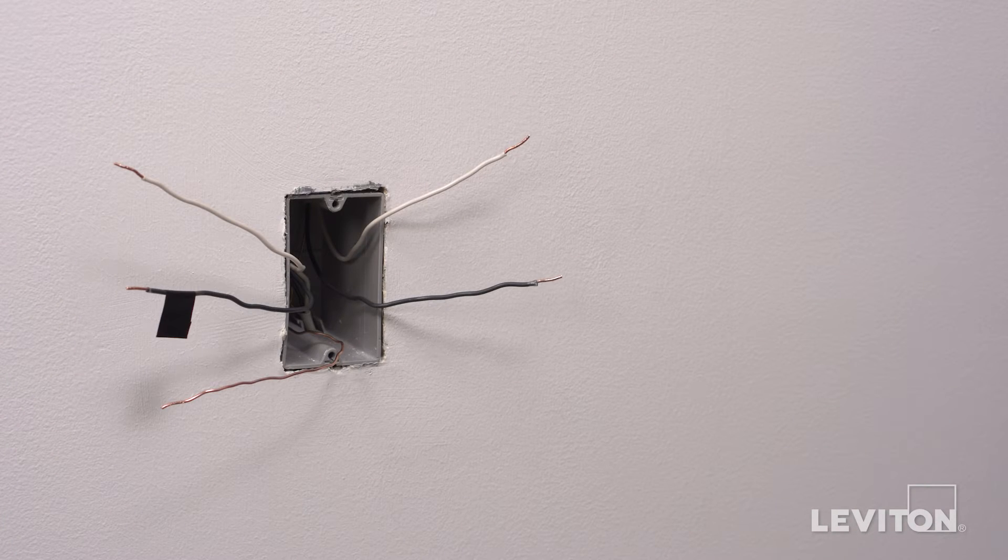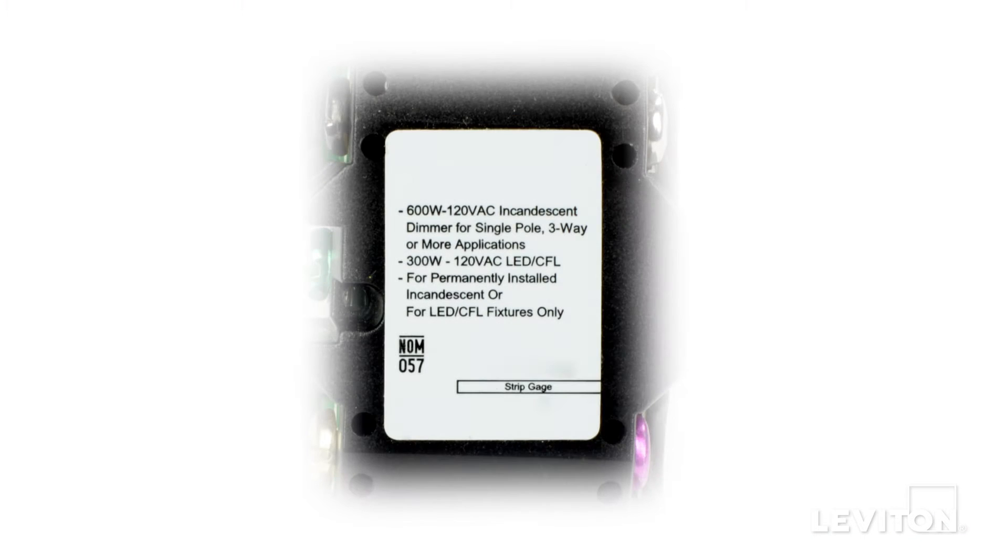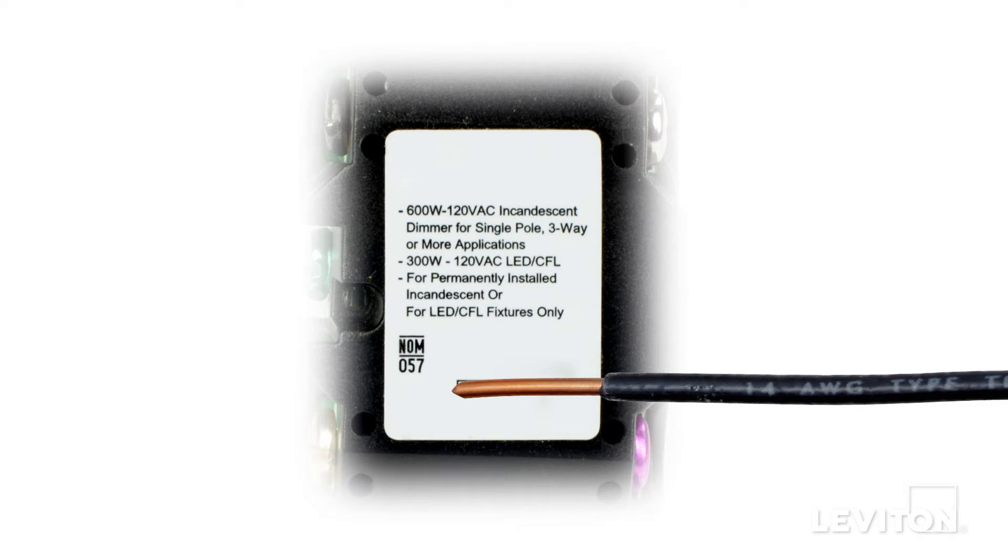Next, you need to be sure that the wires are prepared for installation. Start by making sure the wires are straight and stripped according to the strip gauge located on the back of the device.